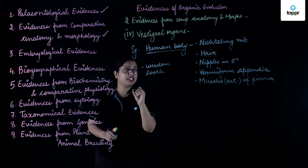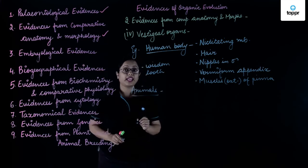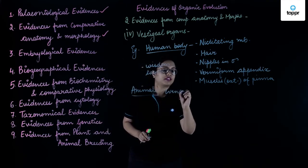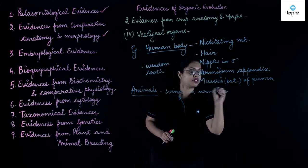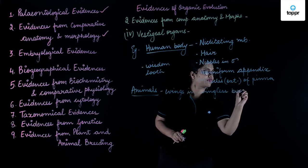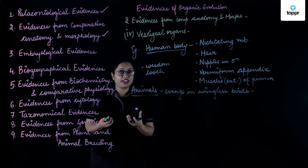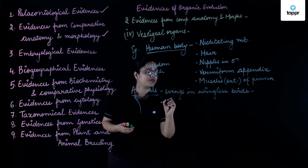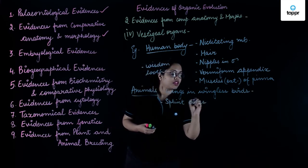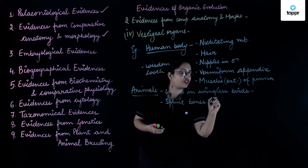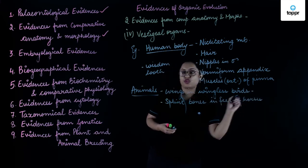Vestigial organs are also present in other animals. Wings in wingless birds, such as ostrich, emu, and kiwi, are vestigial organs. Splint bones in the feet of horses are also vestigial organs.